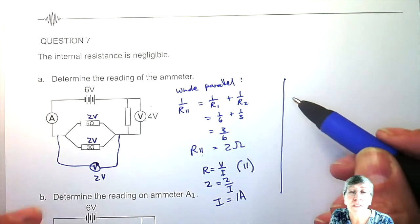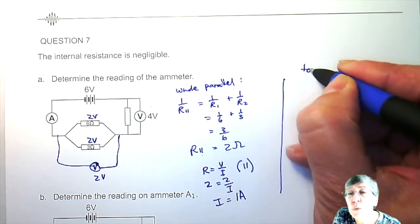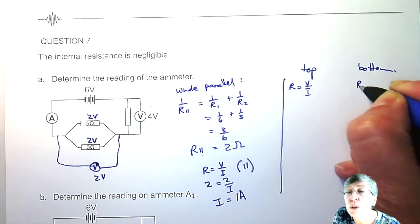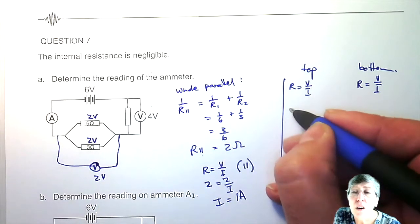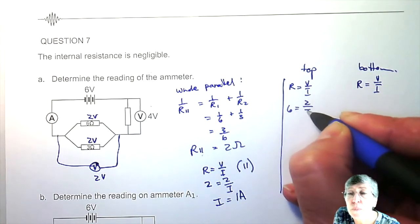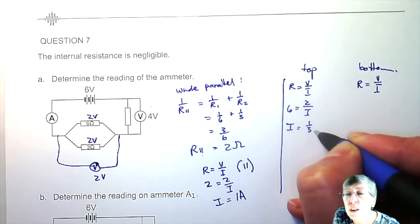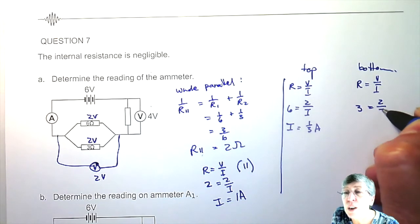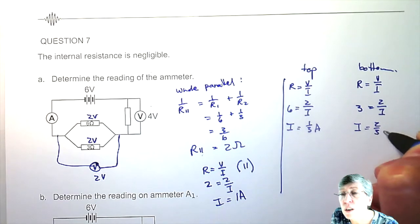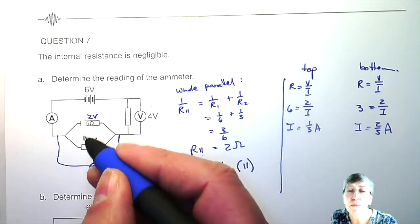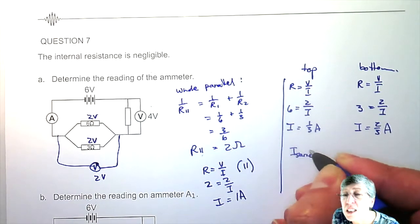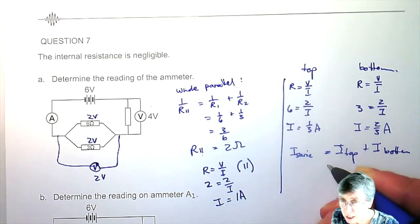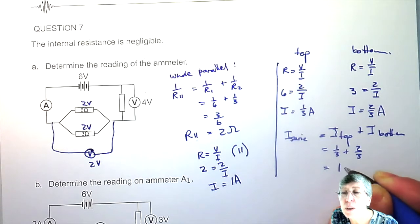But I could also do Ohm's law separately for the two branches. For the top branch: R is 6 ohms and V is 2 volts, so I end up with a current of one-third of an ampere. For the bottom branch: the total resistance is 3 ohms and V is 2 volts, giving two-thirds of an ampere. Then the series current is the current in the top branch plus the current in the bottom branch — one-third plus two-thirds — and once again you end up with 1 ampere.